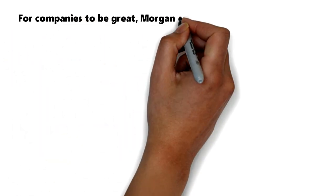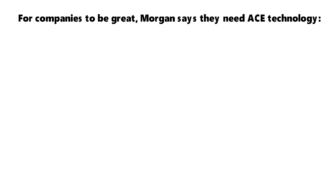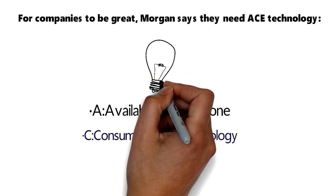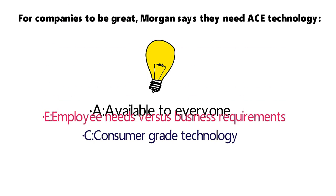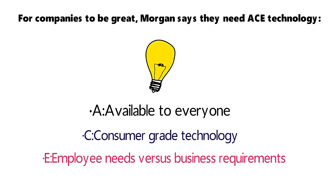For companies to be great, Morgan says they need ACE technology. A: Available to everyone. C: Consumer-grade technology. E: Employee needs versus business requirements.